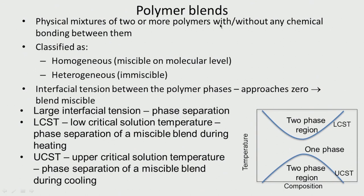A polymer blend is a physical mixture of two or more polymers with or without any chemical bonding. If two or more polymers are combined with a chemical bond, that can be called cross-linked — using cross-linking agents like glutaraldehyde. If it is just a physical mixture, there is no reaction but also no cross-linking. Blends are called homogeneous (miscible on a molecular level) or heterogeneous (immiscible). When blended nicely, the interfacial tension between the polymer phases approaches zero.